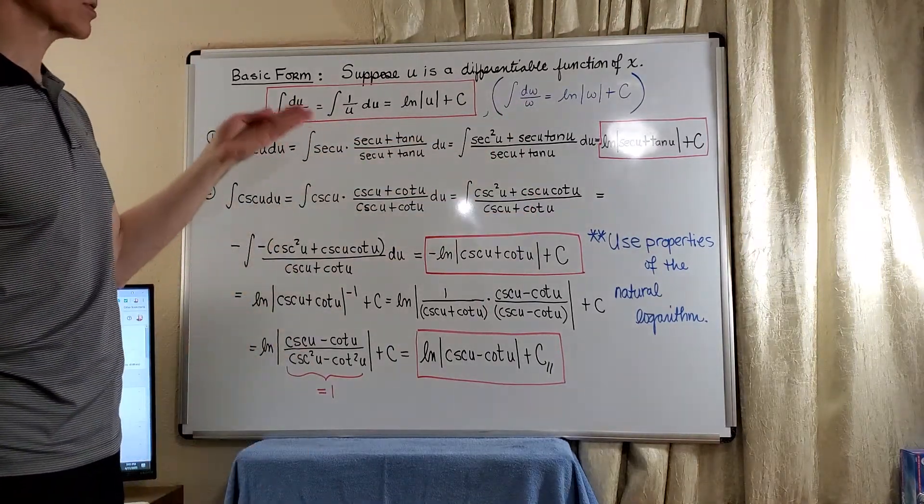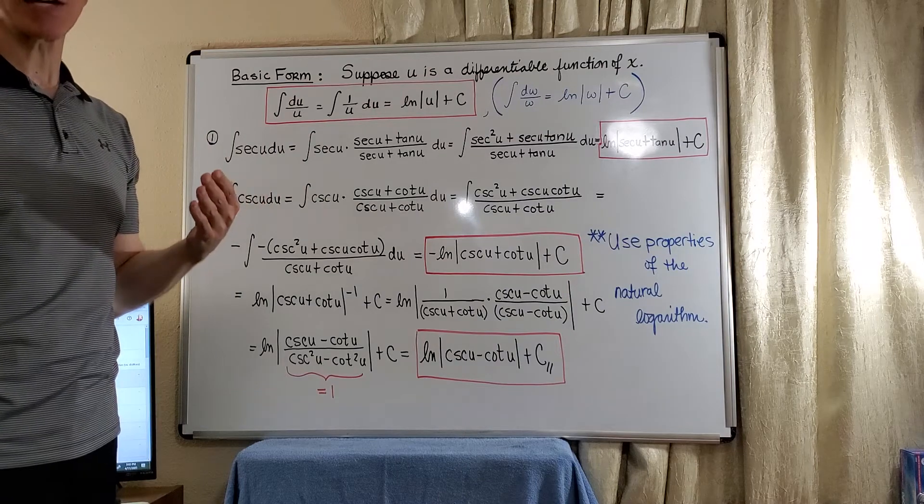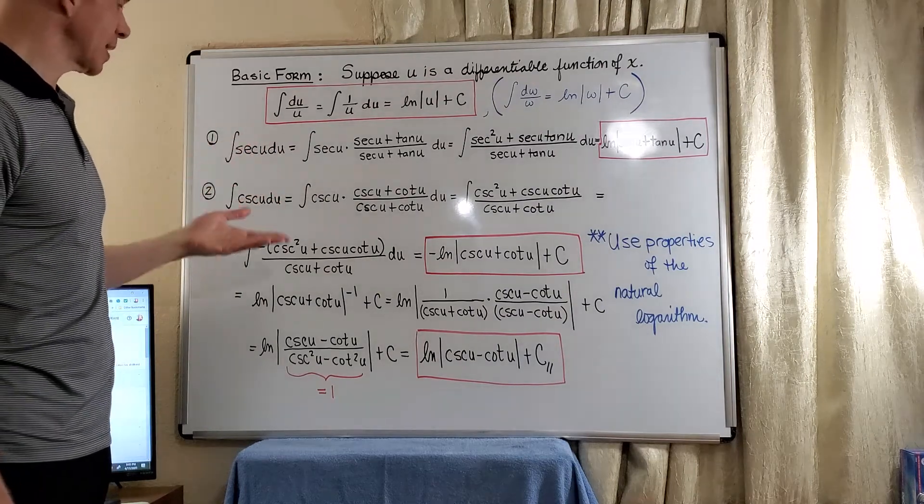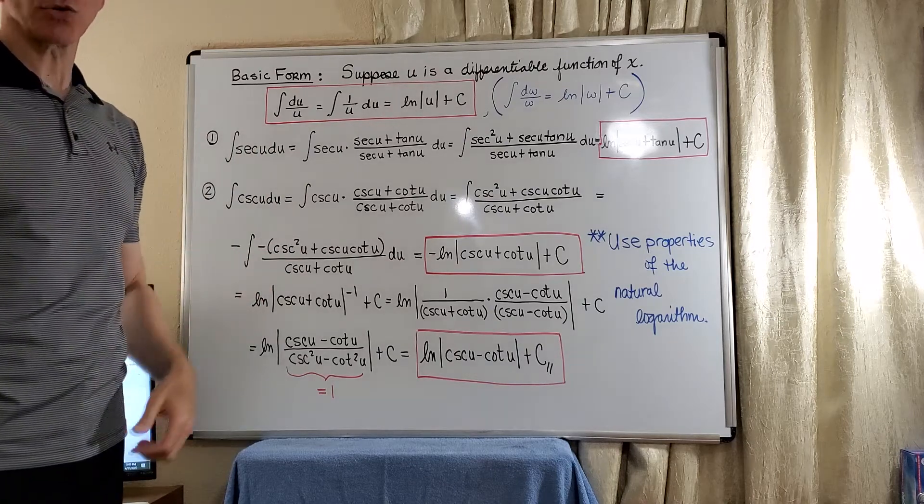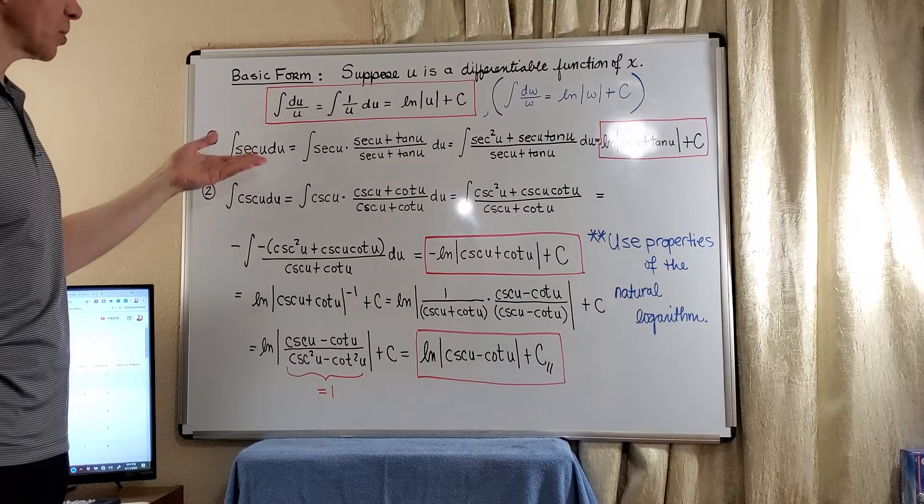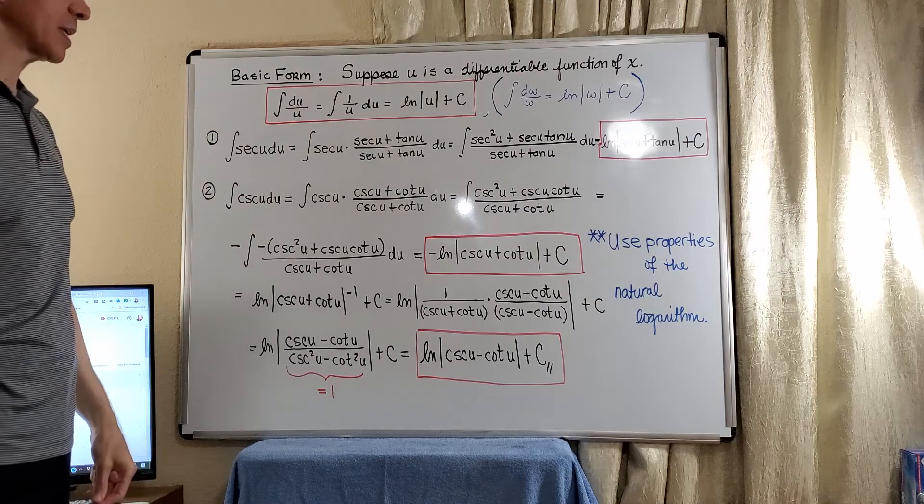Now this form is what we need for the antiderivative tangent, cotangent, secant, and cosecant. And you'll see these in your notes. So I wanted to take the opportunity to show you how they work for secant and cosecant.